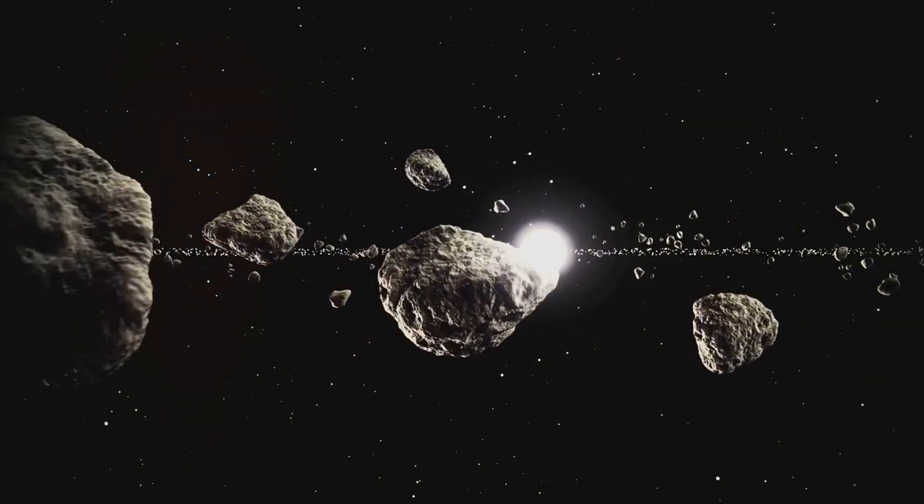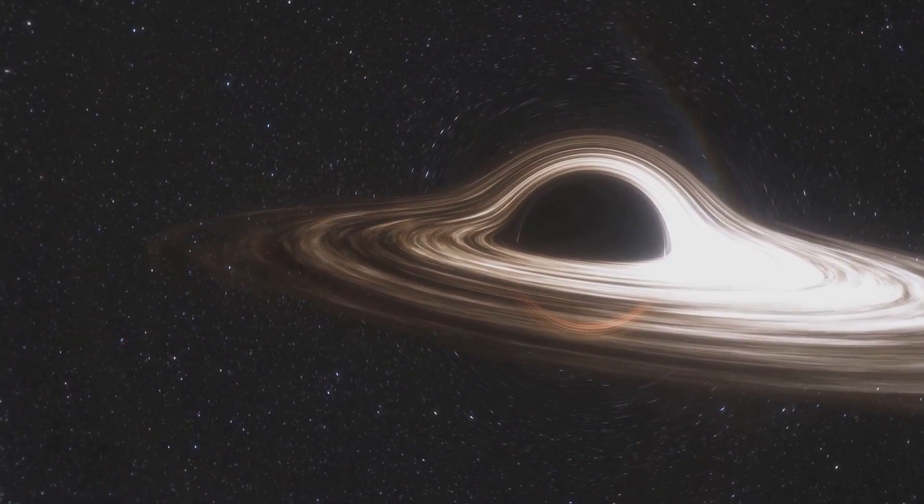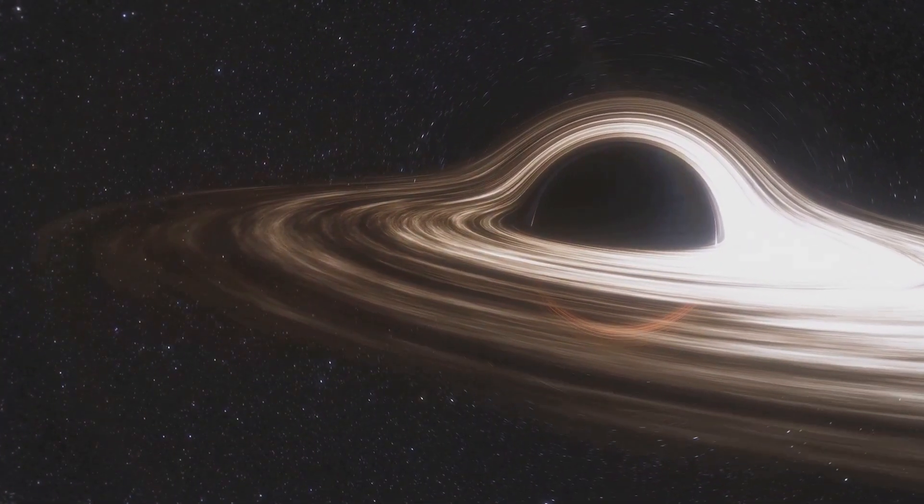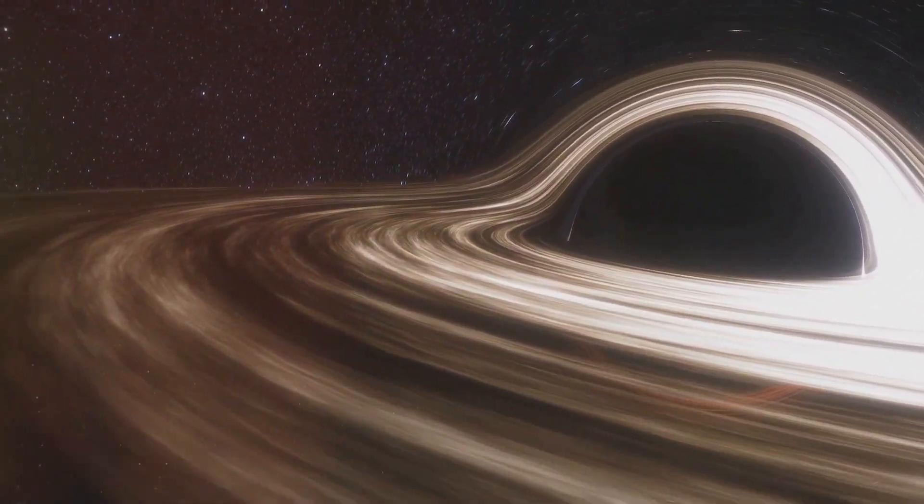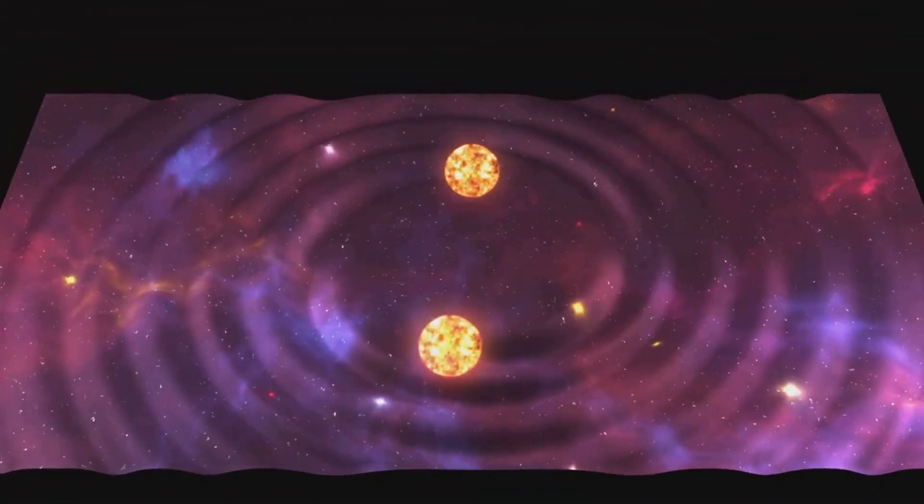This is what Sir Isaac Newton's law of universal gravitation is all about. It tells us that every object in the universe attracts every other object. The strength of this attraction depends on the mass of the objects and the distance between them. It's like a cosmic dance where everything is drawn towards everything else.